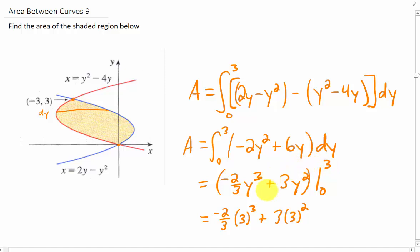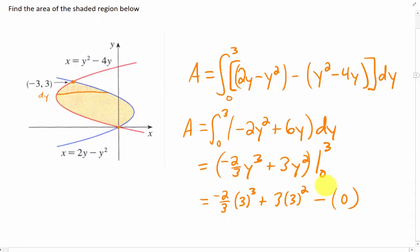If we plug in our upper limit of 3, we get this, and if we plug in our lower limit of 0, everything in this function turns out to be 0. That simplifies things a little bit.